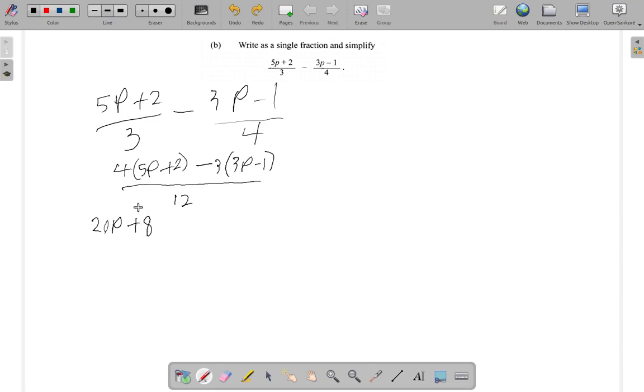You see that what you have is 4 times 5P and then you have 4 times 2. 4 by 5P, 4 by 5 is 20, and you have P plus 4 times 2 is 8.